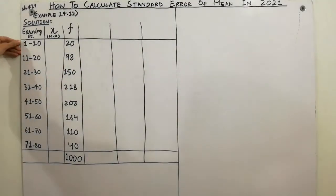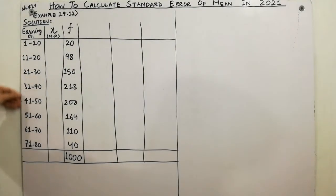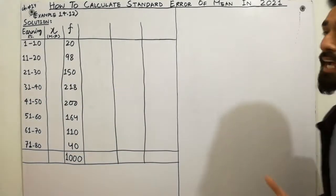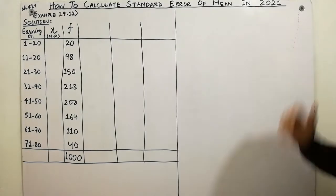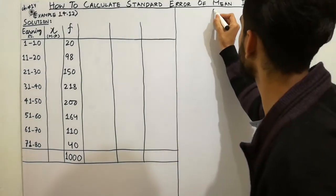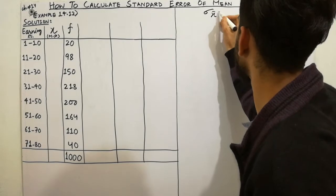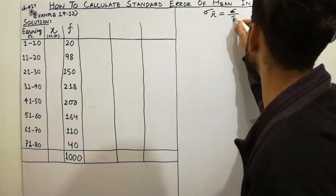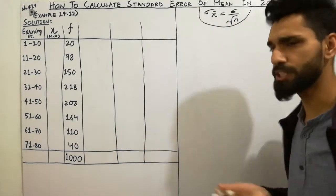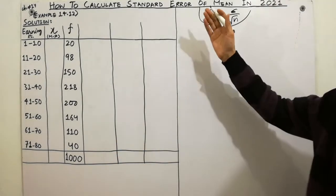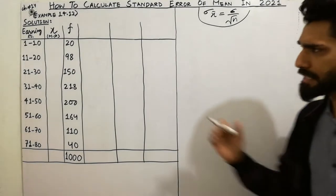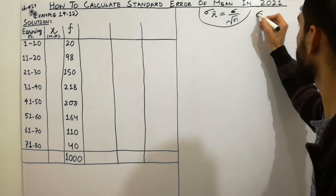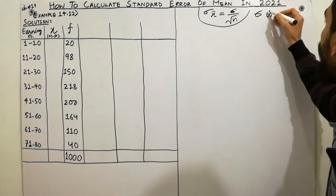Here the example is already given — data and frequency are given. As you already know, the standard error of mean formula is: sigma x-bar is equal to sigma divided by square root of n. That's the formula we mostly use in the calculation of standard error of mean. But in this example, sigma is not given.